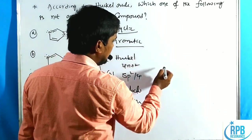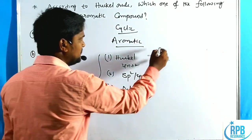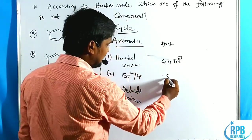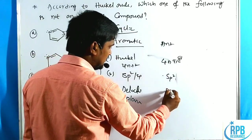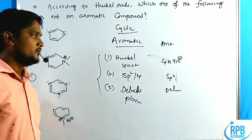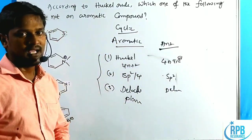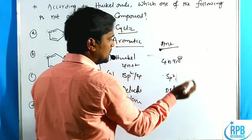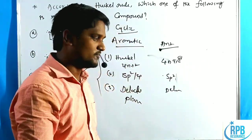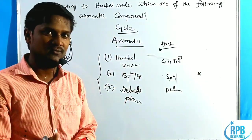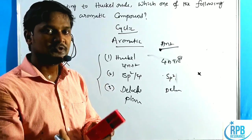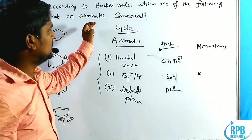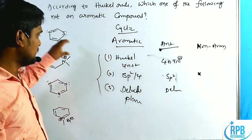For anti-aromatic compounds, instead of 4n+2, the compound has 4n pi electrons, with the same remaining conditions — delocalized and planar. If all three of those rules are satisfied, it is anti-aromatic. If any one of the six conditions is not satisfied — for example, an odd number of electrons, not 4n+2 or 4n, or even just one sp3 atom present — then the compound is called non-aromatic.